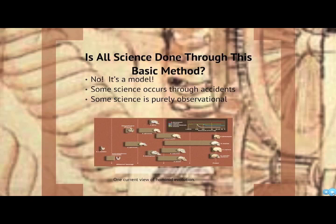Is that exactly how it works all the time? No, it's a model. Some science occurs through accidents, and some is purely observational — we don't necessarily do experiments in the lab. An example of science that occurs through accidents is hominid evolution. Sometimes a new skull or skeleton comes to light in Olduvai Gorge in Africa that wasn't known before, and we have to reassess our entire understanding of human evolution based on its shape and various parameters.